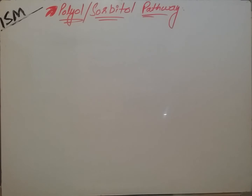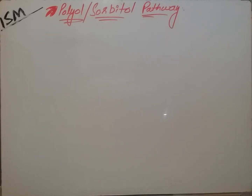Today we are going to discuss the sorbitol pathway, also called the polyol pathway. This is a process in which glucose is converted into sorbitol, and then sorbitol is converted to fructose. This pathway mainly takes place in diabetic patients when the blood glucose level increases — that is, in hyperglycemic conditions.